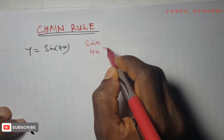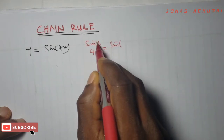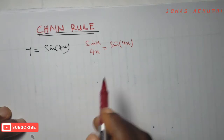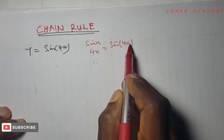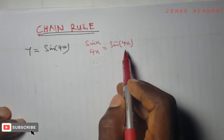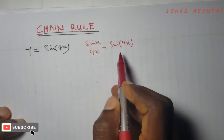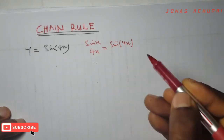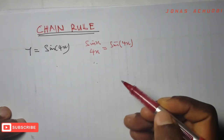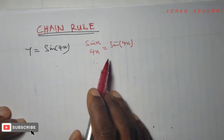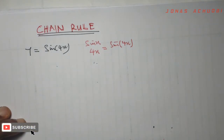So we have sine and inside of it we have 4x. You have two functions sitting here and this is what we refer to as the composition of two functions. The chain rule is applied when there is a function lying or sitting inside of another function. The procedure for differentiating such functions is what we refer to as the Leibniz rule.